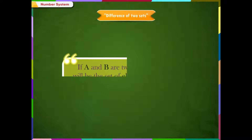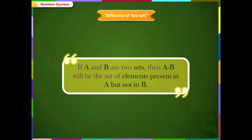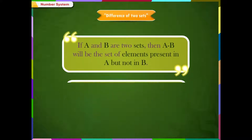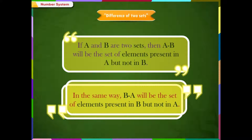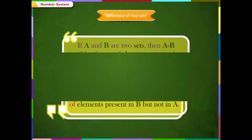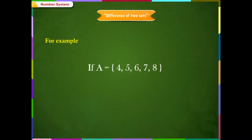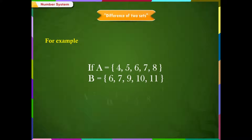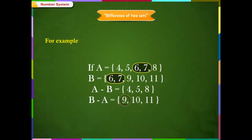Operation on sets. Difference of two sets: if A and B are two sets, then A minus B will be the set of elements present in A but not in B. Similarly, B minus A will be the set of elements present in B but not in A. For example, if A is equal to {4, 5, 6, 7, 8} and B is equal to {6, 7, 9, 10, 11}, then A minus B is equal to {4, 5, 8} and B minus A is equal to {9, 10, 11}.